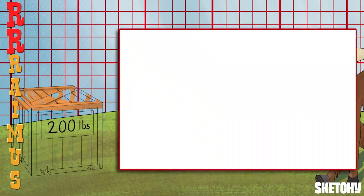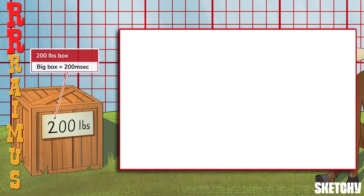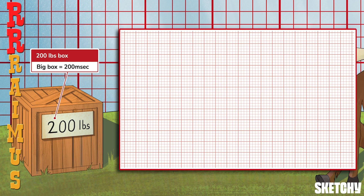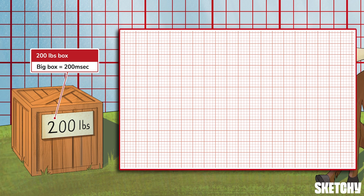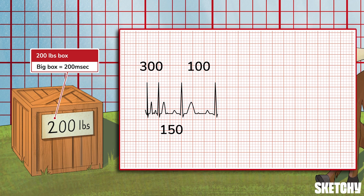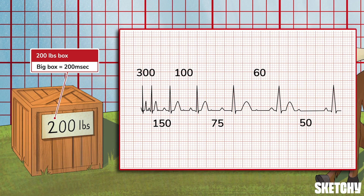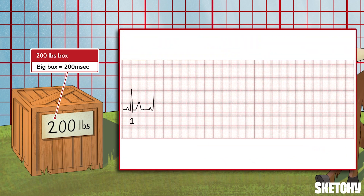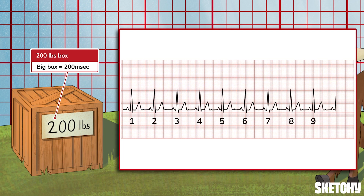We'll start with Rate. One big box on EKG paper equals 200 milliseconds, and we can use that to determine the rate by counting the number of big boxes between successive R waves. If an R wave occurs on every big box, the ventricles are contracting every 200 milliseconds, giving a heart rate of 300. If the R wave occurs every other box, the rate is 150. You can count out the rate like this: 300, 150, 100, 75, 60, 50. Or, because the standard EKG records for 10 seconds, you can count the total number of beats along the bottom and multiply by six.